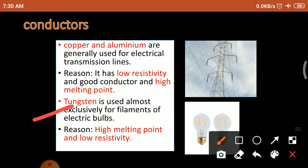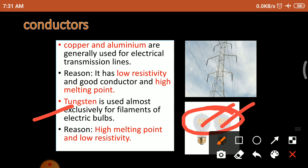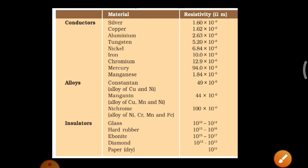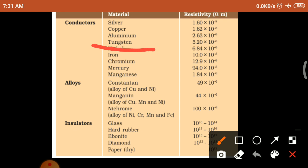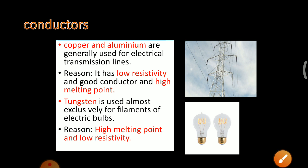Tungsten is used almost exclusively for the filament of electric bulbs. There are two reasons: one is high melting point and the other is low resistivity. The tungsten is a conductor with low resistivity value and also has a high melting point. Because of these two reasons the filament of an electric bulb is made of tungsten material.